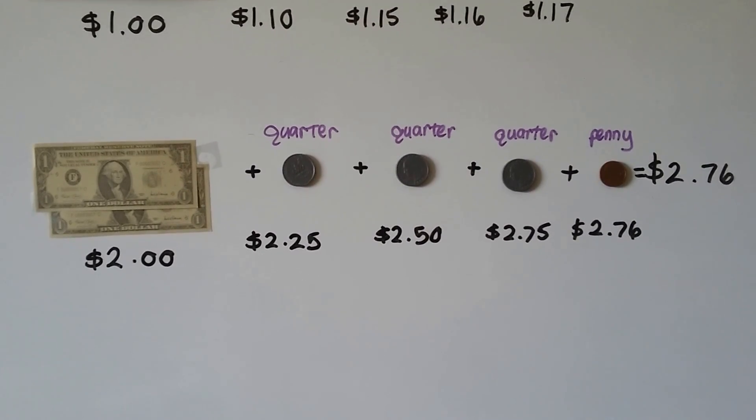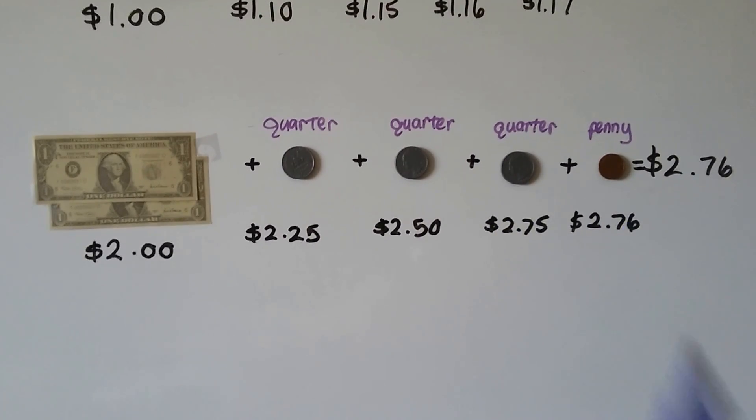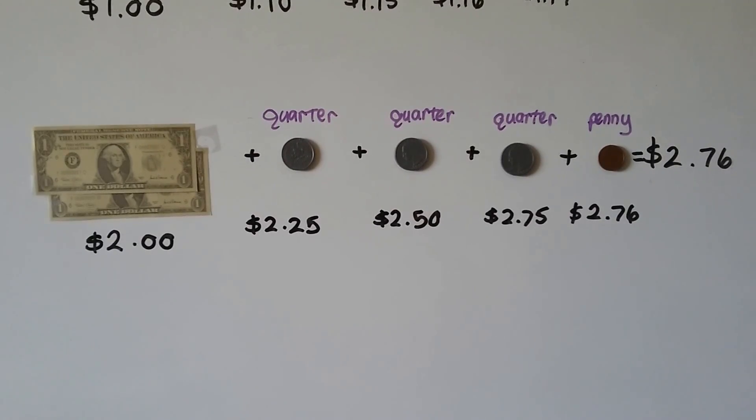You start with the bills and then you count the larger value coins and then you slowly get down to the pennies or the smaller coins.